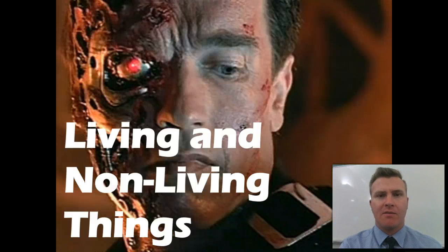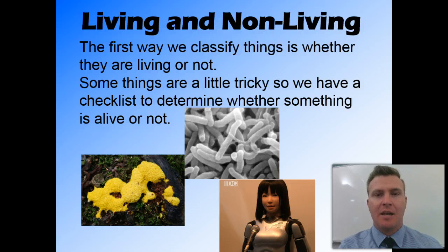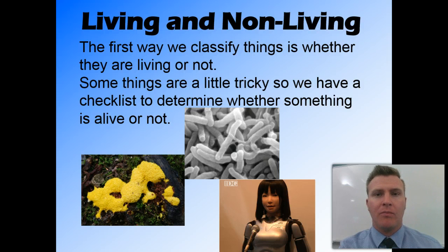In this video, we're going to look at classifying things as being either living or non-living. This is the simplest way that we can classify things, and it allows us to then break these two categories down into smaller, more specific groups later on. Most things are very obvious whether they're alive or not. However, some can pose a little bit of a problem, so to deal with this, we have a checklist to see whether something's living or not.